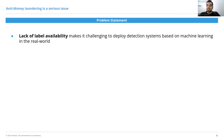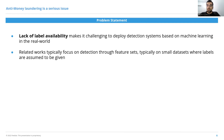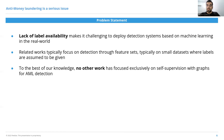Developing alternative systems that either replace or complement rule-based systems using machine learning is challenging, mainly due to the lack of label availability. All related work that relies exclusively on supervision has very limited applicability in the real world, and works that rely on unsupervised outlier detection typically do this through manually engineered feature sets. As far as we know, no other work has focused exclusively on self-supervision and on exploiting the graph structure for AML detection.